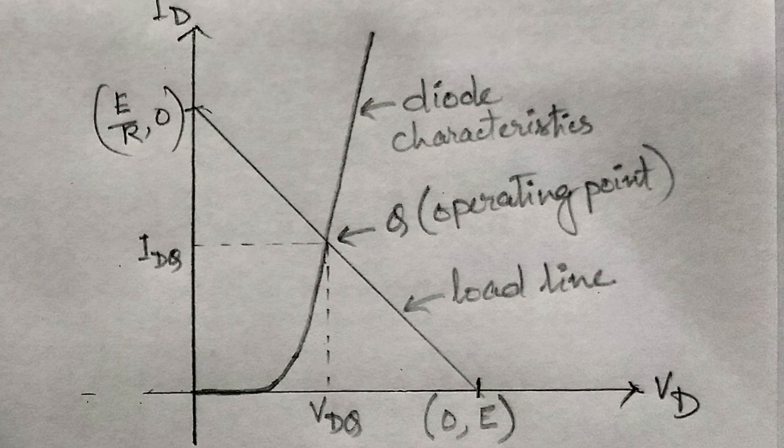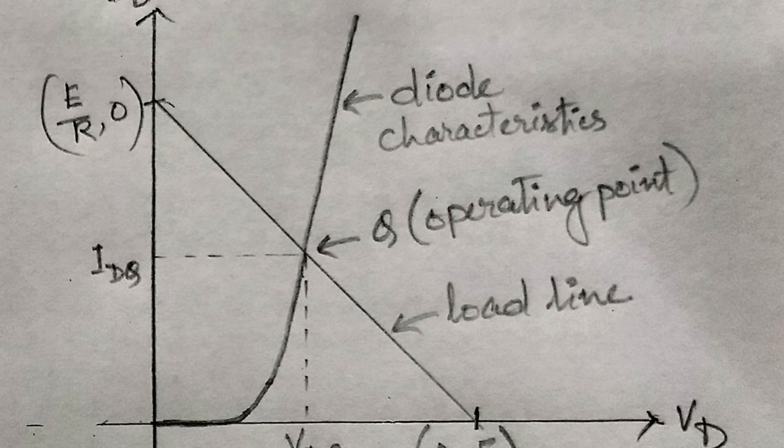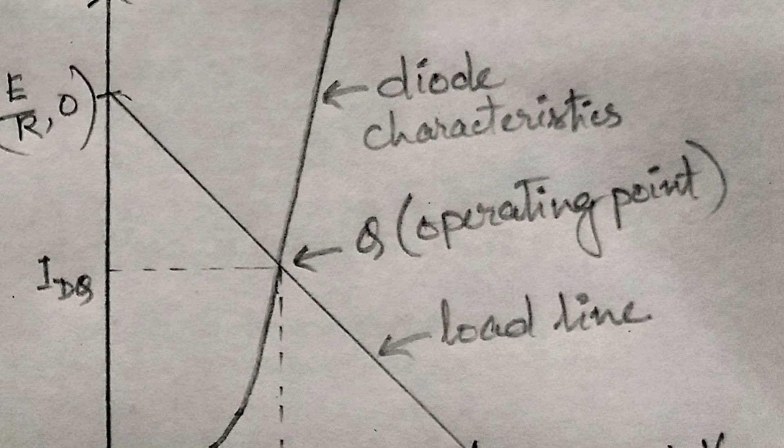The operating point is also called the quiescent point or Q point. This Q point can be found out by solving equation 12.1 with diode current equation.